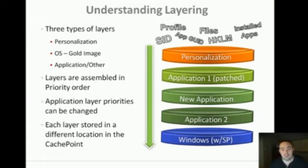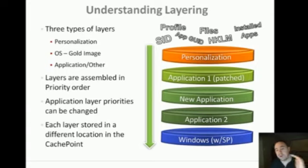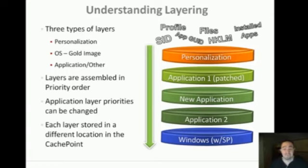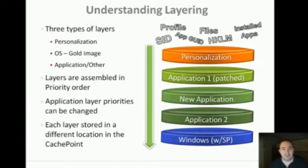All these layers are stored in different file system locations inside our cache point and are isolated from each other. So when a user writes a file, he's writing it to his personalization layer or the machine's personalization layer. When Windows or an application gets updated by IT, it doesn't impact what the user has done. You can override some things, roll users back — but that's pretty much a two or three minute primer on how our layering technology works.